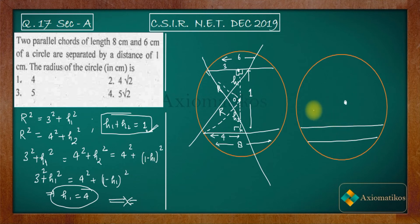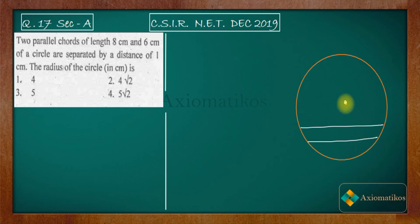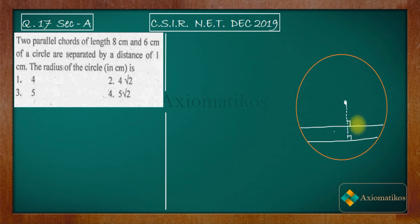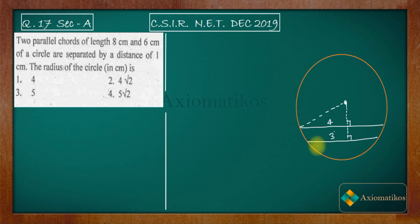So we move to Case 2. Here both chords are on the same side of the center. Again, since the chords are parallel, a single perpendicular from the center works for both. Using the bisection property again: the 8 cm chord gives a half-length of 4 cm, and the 6 cm chord gives a half-length of 3 cm. Our aim is to find the radius.